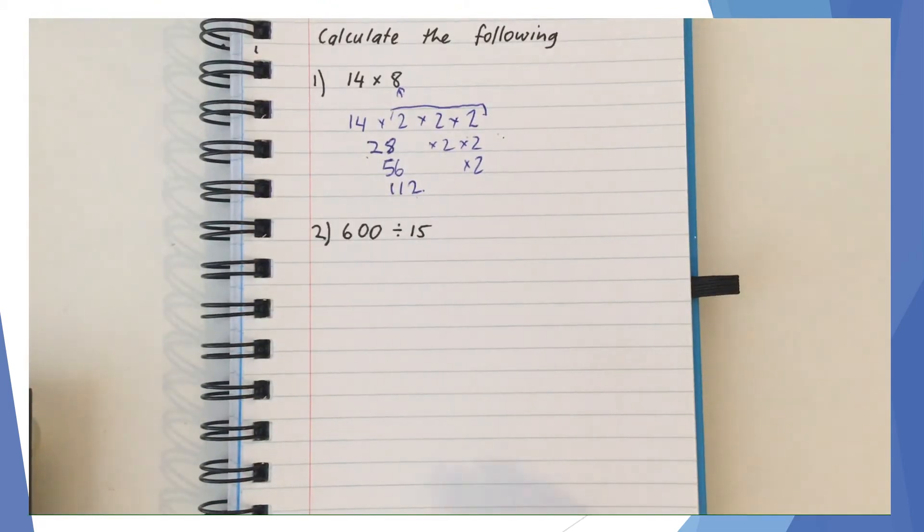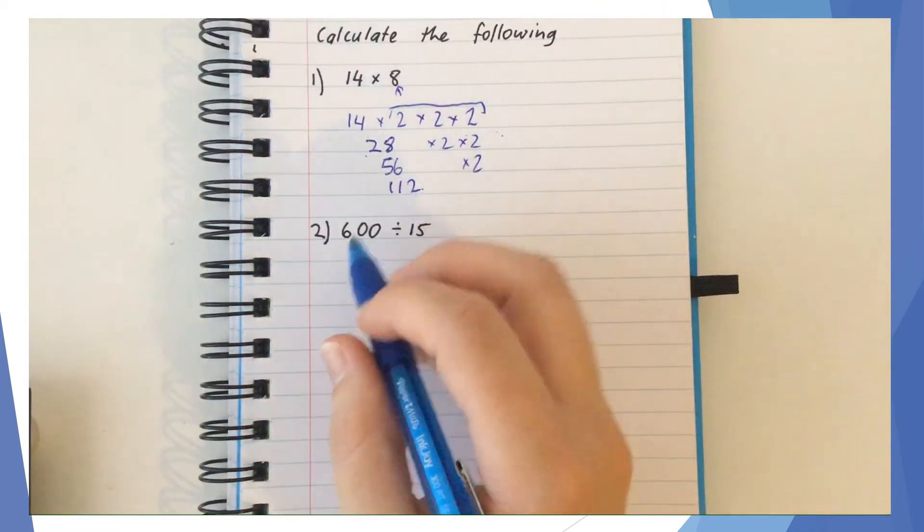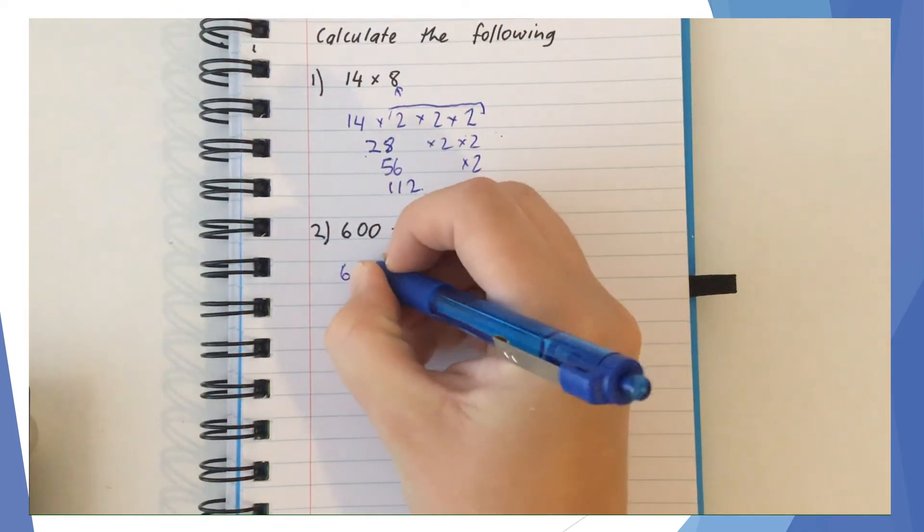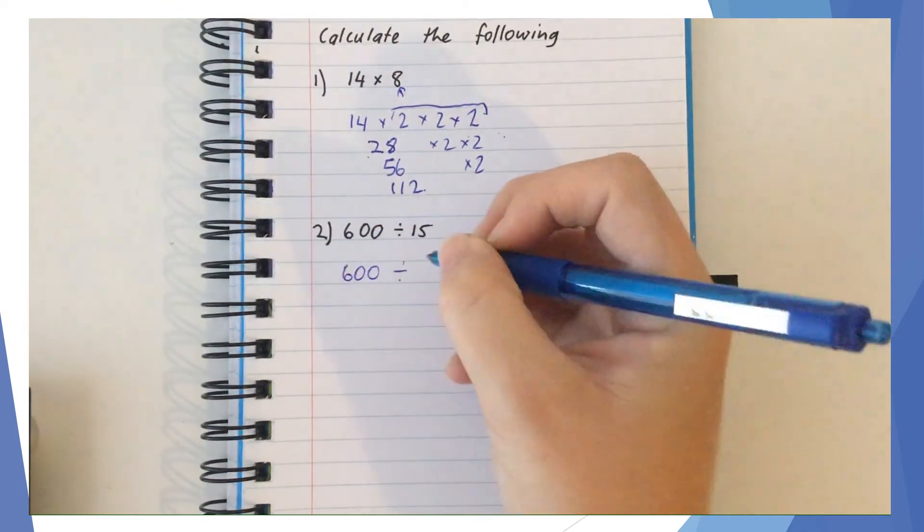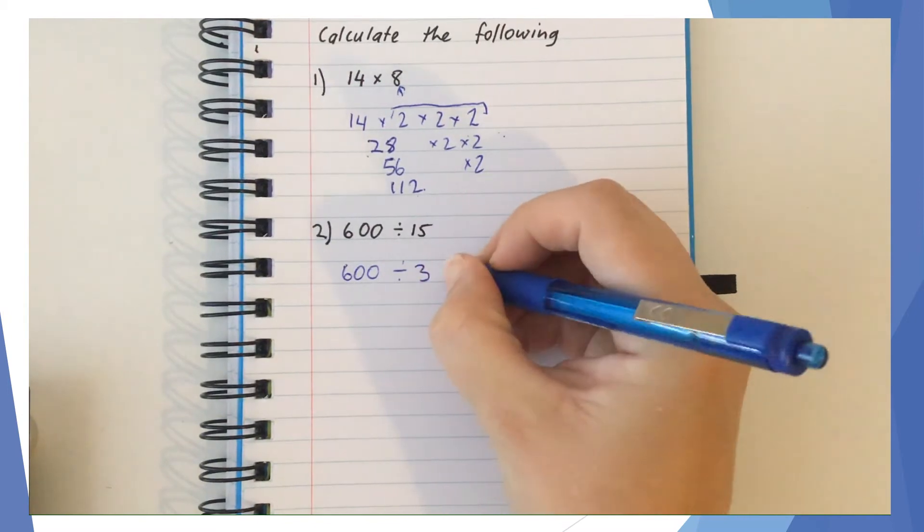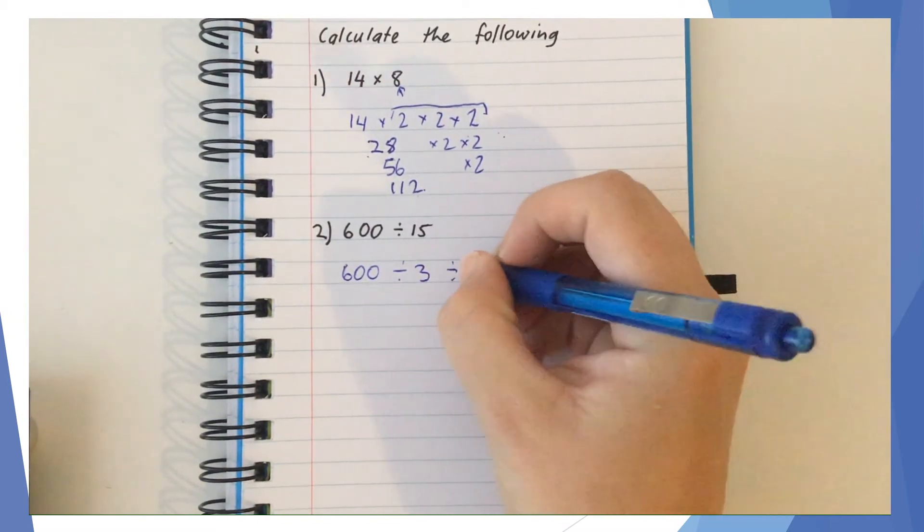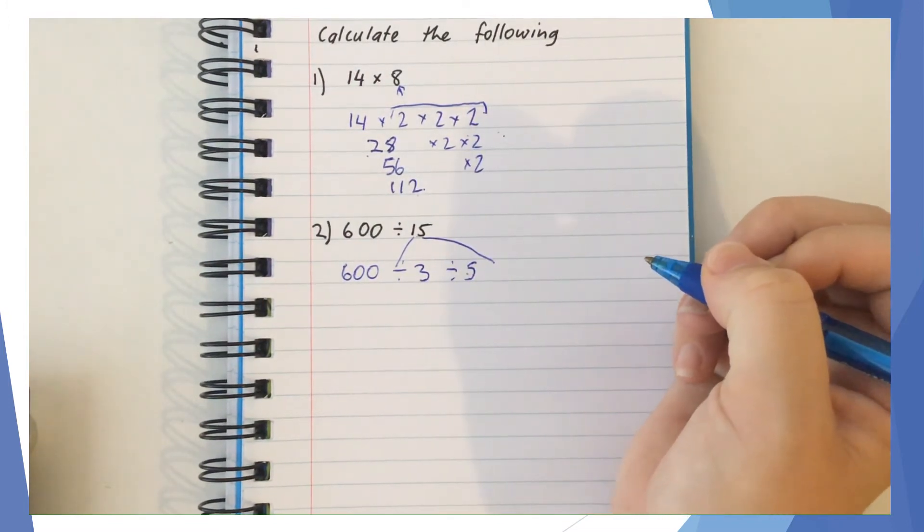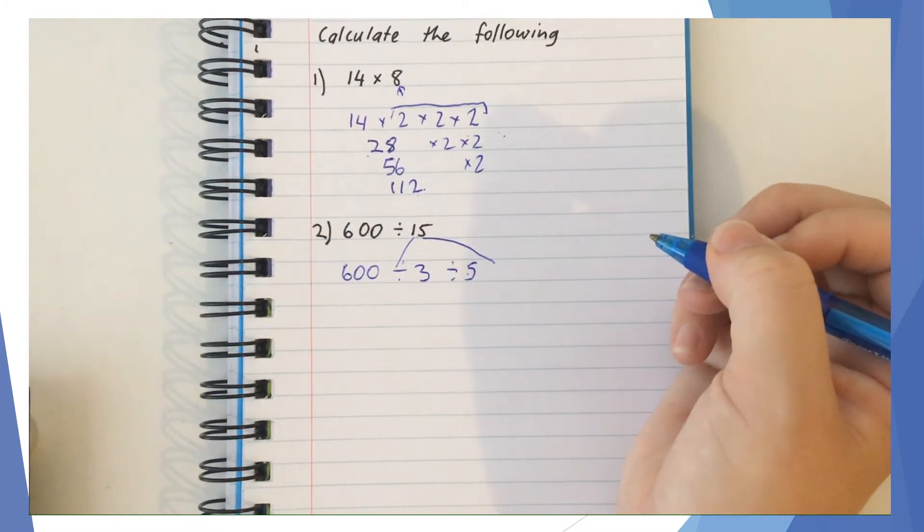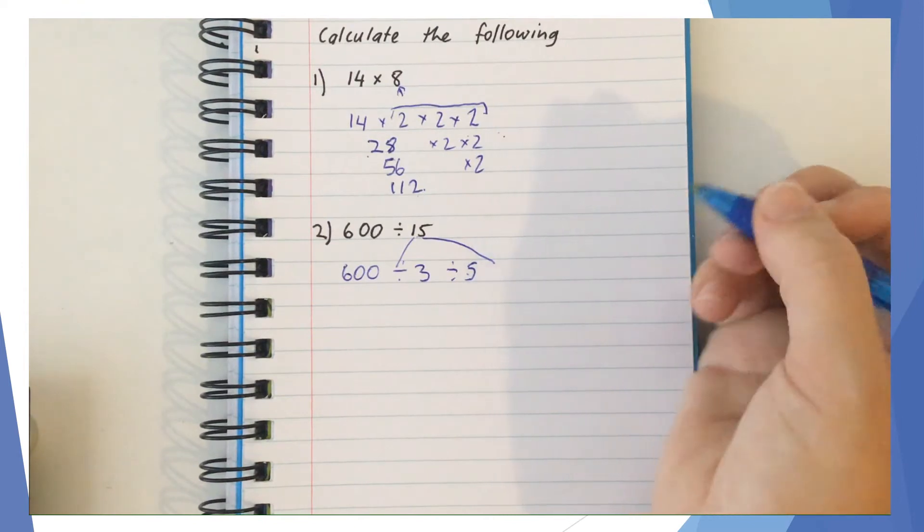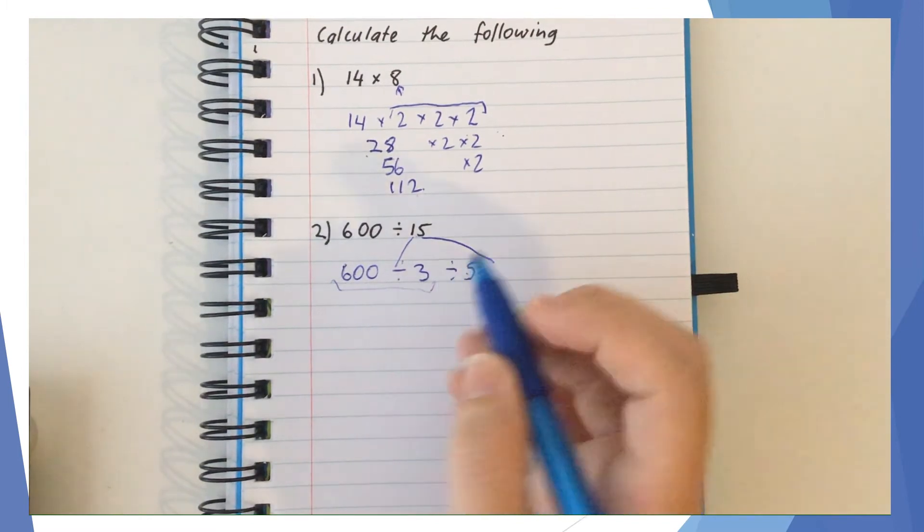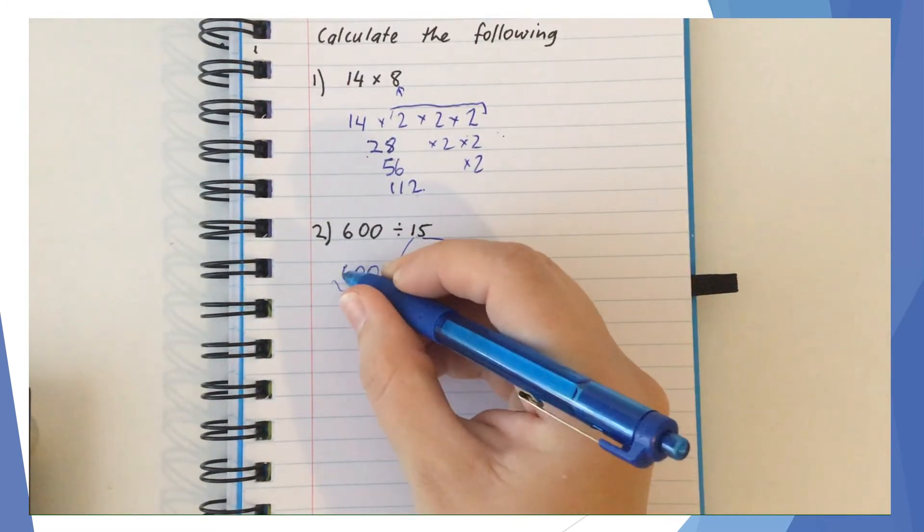Now we're going to do 600 divided by 15. Instead of doing 600 divided by 15, I'm going to split that up and make it 600 divided by 3 and then divided by 5, because I can split 15 up into divided by 3 divided by 5. That's what I'm allowed to do when working in stages.